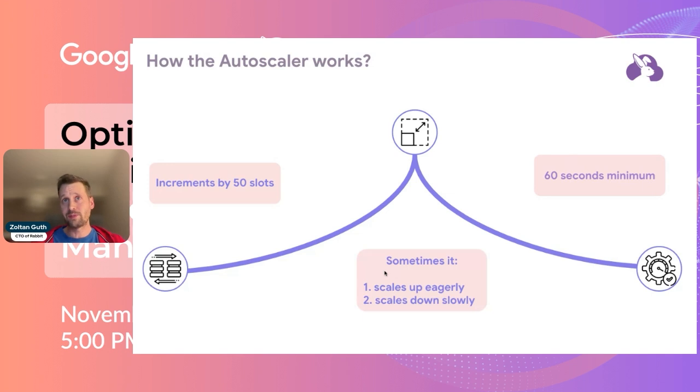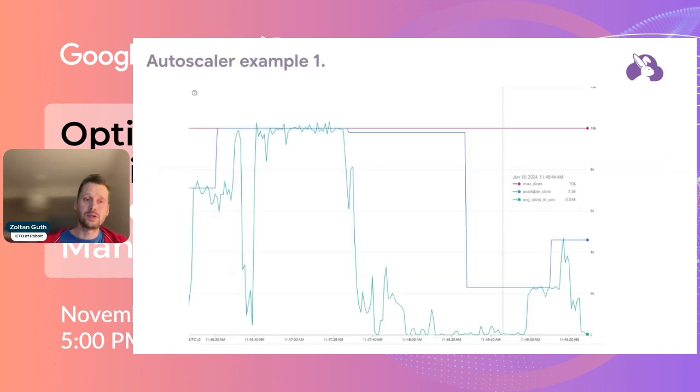Another thing we see sometimes is that it scales up too eagerly, which can be a good thing because if you have critical pipelines that you have to run quickly and the duration is important for your pipelines, then BigQuery autoscaler can scale up on a second basis. But on the other hand, we also see that sometimes it scales down too slowly.